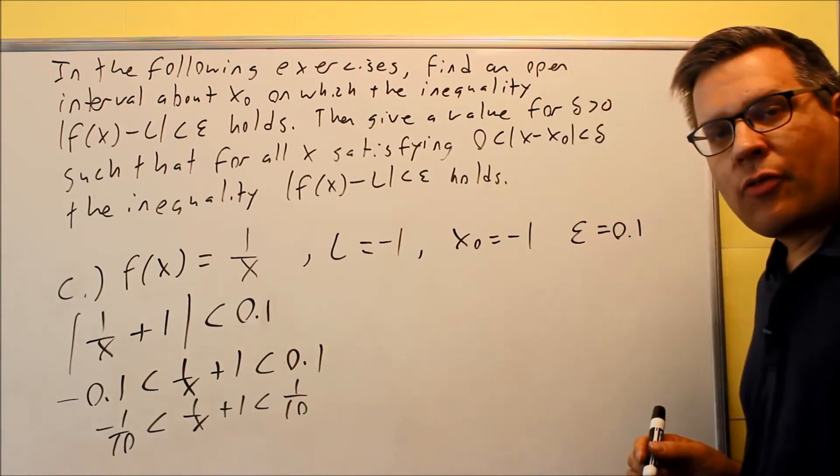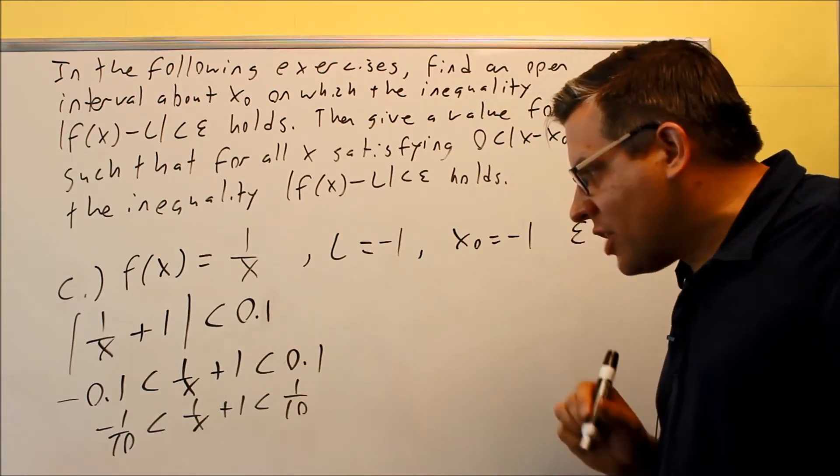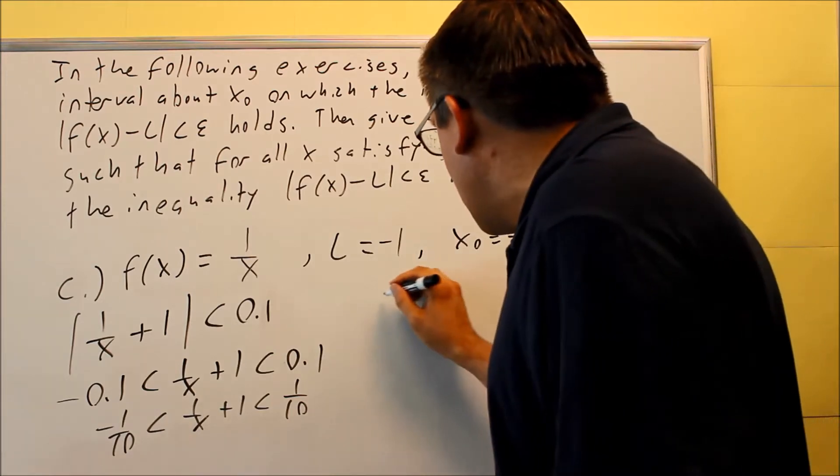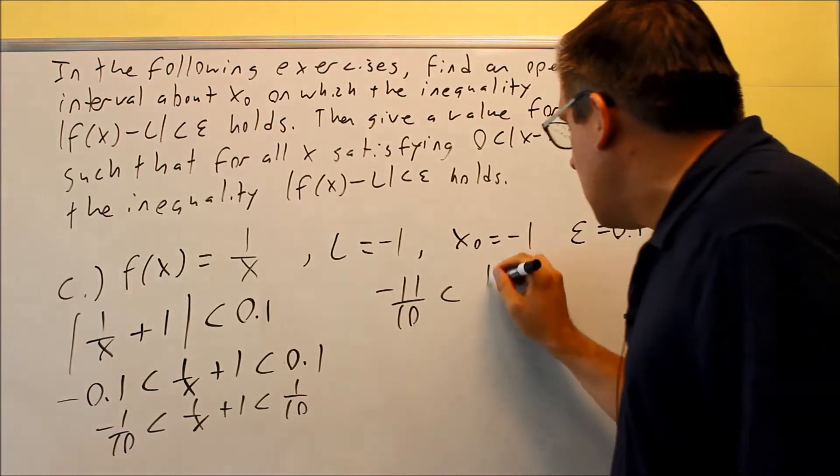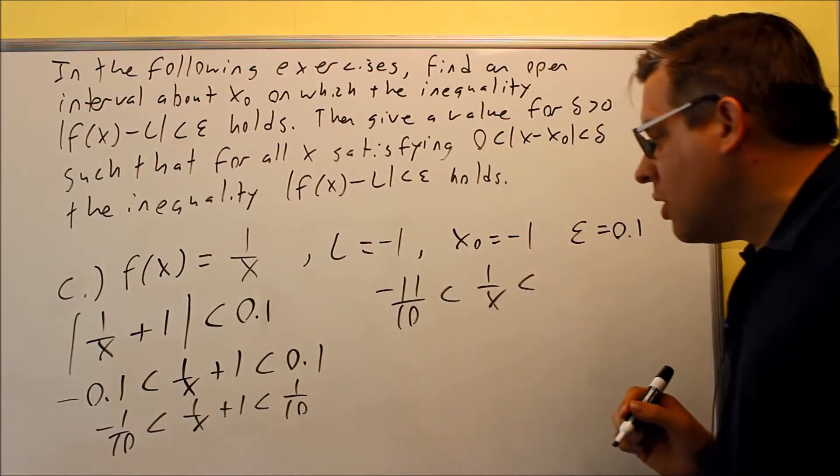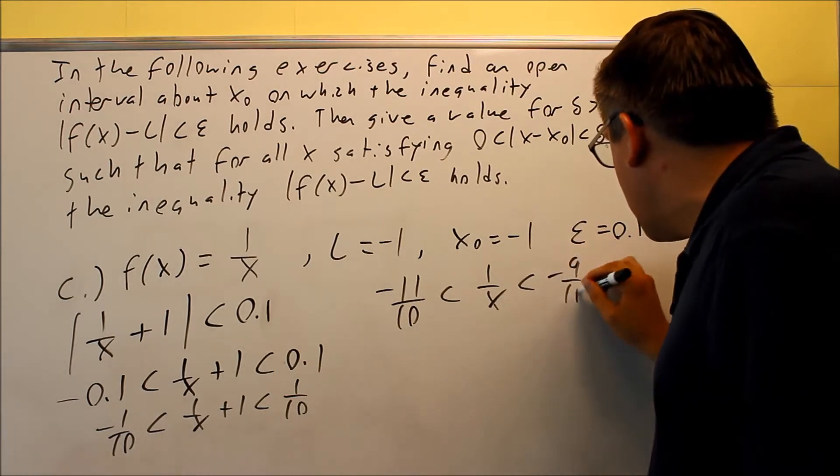So I'm going to subtract 1 from all the sides. When you subtract 1, it's really subtracting 10 over 10. So when you subtract that and get the common denominators, you're going to get negative 11 tenths less than 1 over x. And then this one, if you subtract 1 from that, 1 tenth minus 10 tenths will give you negative 9 tenths.